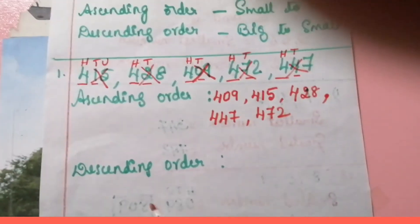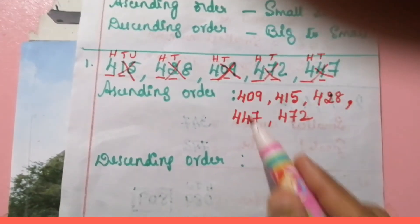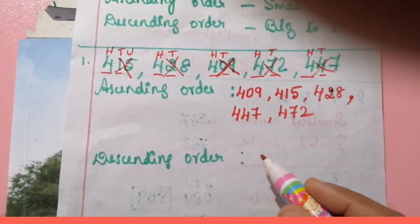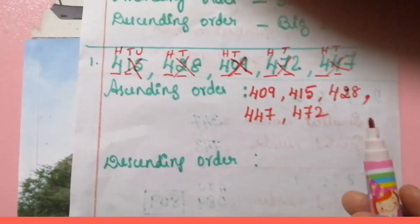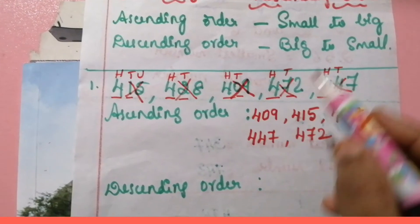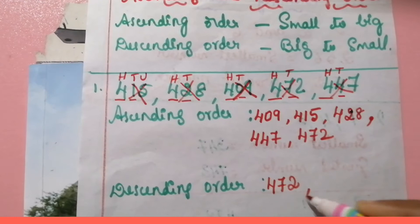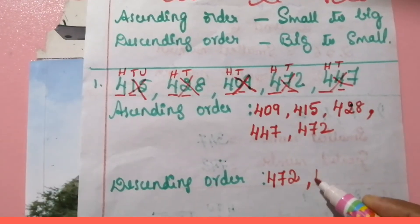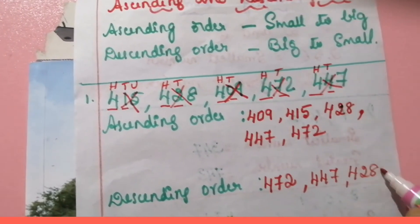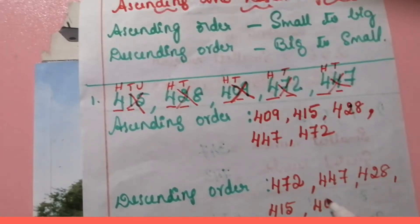It is very easy to arrange the numbers in descending order — just the opposite. When the given numbers are to be written in descending order, we start from the greatest number: four hundred and seventy-two, four hundred and forty-seven, four hundred and twenty-eight, four hundred and fifteen, and four hundred and nine.